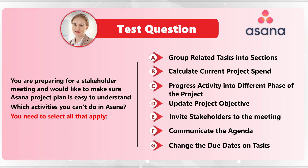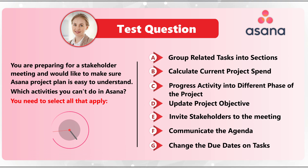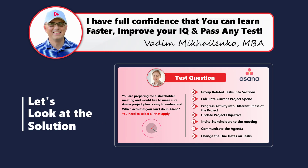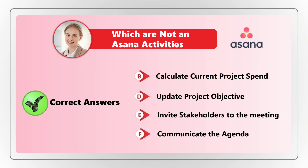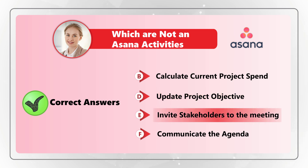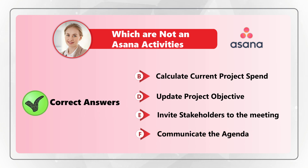Take a close look — give yourself 10 to 15 seconds to see if you can get to the answer. I think this question is designed to trick you. I think choices B — calculate current project spend — choice D — update project objective — choice E — invite stakeholders to the meeting — as well as choice F — communicate the agenda — represent the right answer, because these are not typically Asana activities.